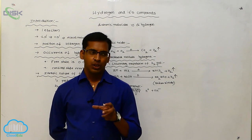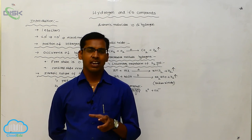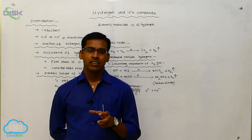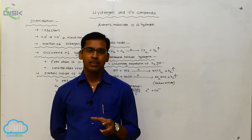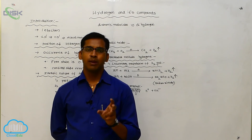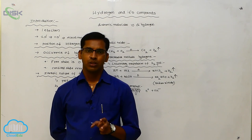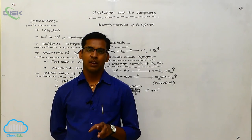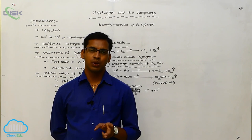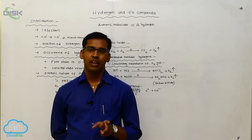In the Castner-Kellner method, two types of electrodes are used: one is the cathode, another one is the anode. The cathode is mercury metal and the anode is carbon.